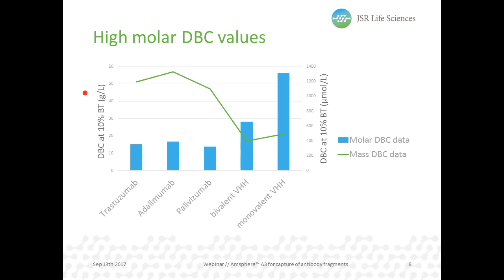However, the molecular weight of these antibody fragments is about 10 to 11 times lower than that of a monoclonal antibody. So when comparing DBC values for different types of molecules, it's better to take into account their molecular weight. When we do that, we get the molar DBC values shown in the blue bars. These molar DBC data give a more complete comparison, representing the number of molecules that can be bound expressed in micromole per liter. This shows that about three to four times more monovalent VHHs bind per multimeric protein A ligand than for full-size mAbs, indicating that not only affinity but also spatial limitations determine how many molecules can be bound.